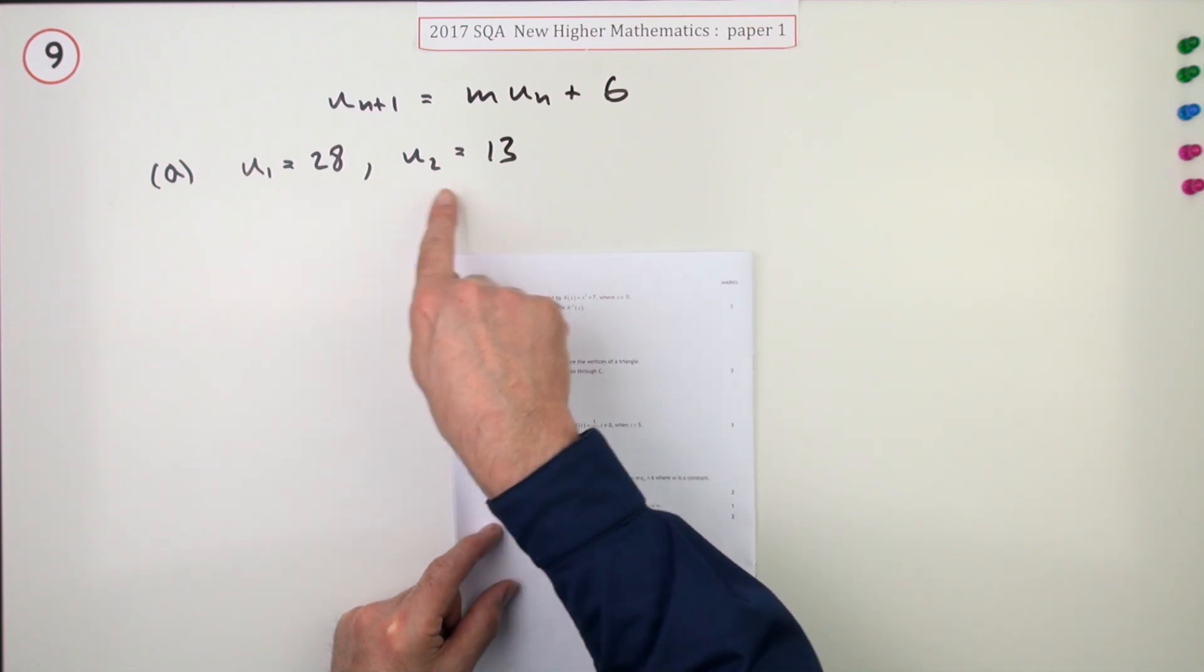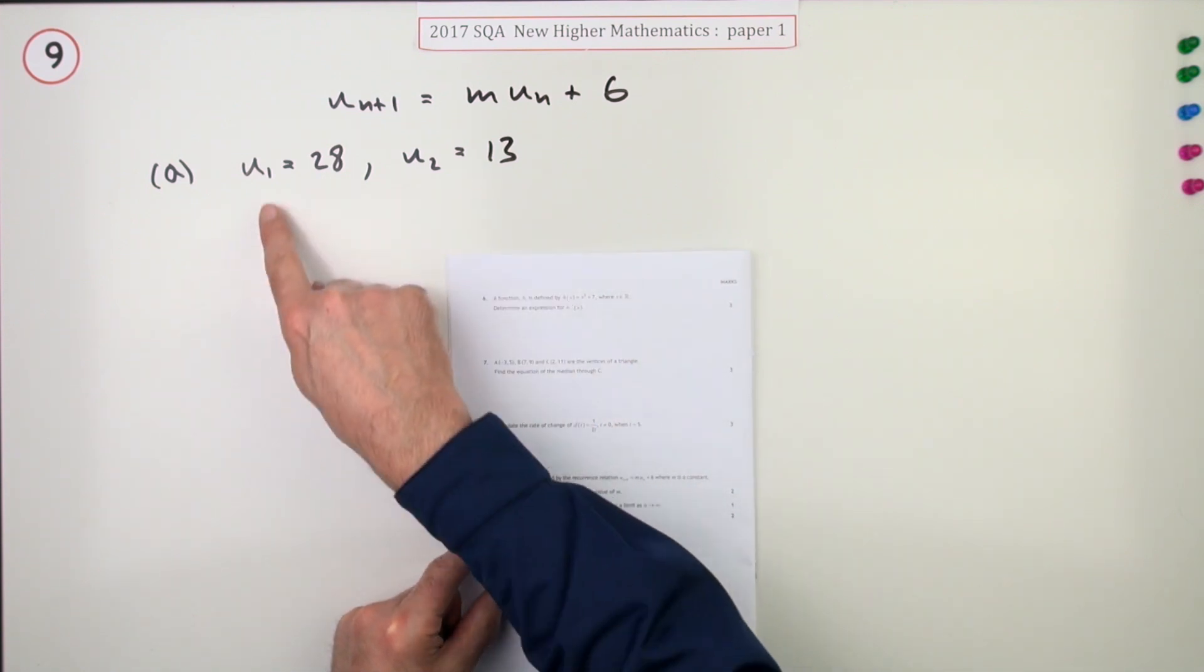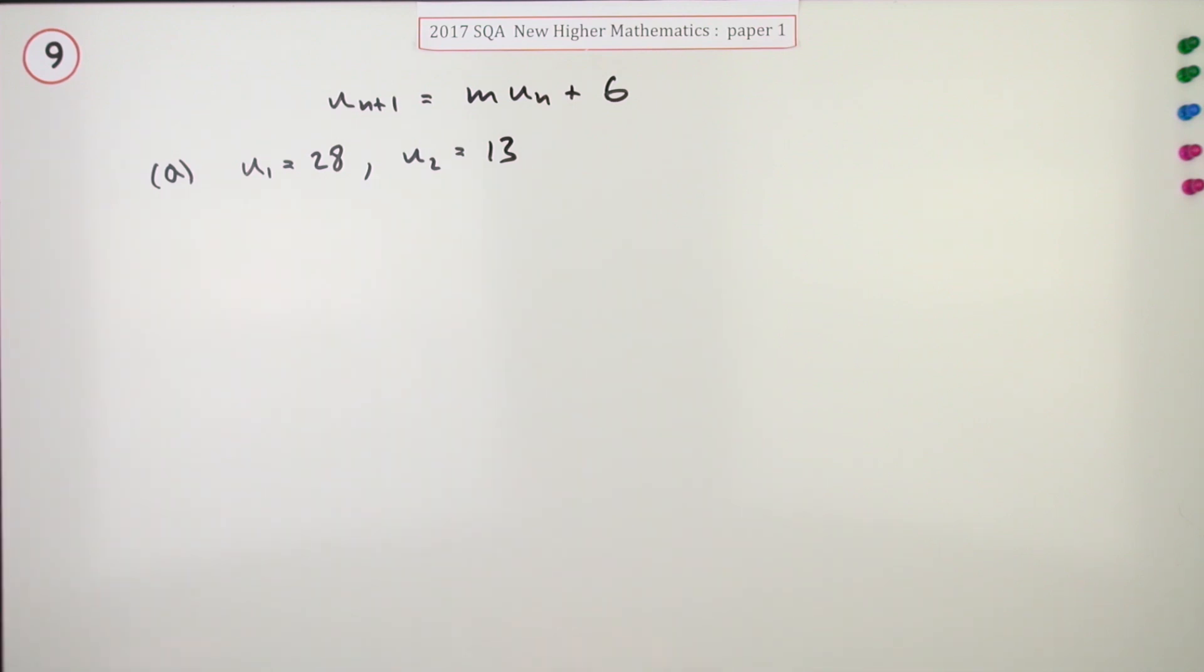For the first two marks, given these two consecutive terms, u1 and u2, find the value of m for two marks.